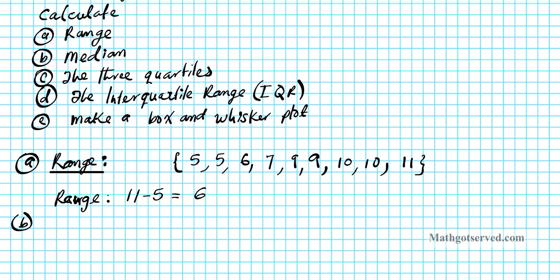Let's move on to part B — we have to find the median. It depends on the number of elements in your data set. If you have an odd number of elements in your set, you always have a middle number and that would be your median. But if you have an even number of elements in your set, you have to average the two numbers in the center.